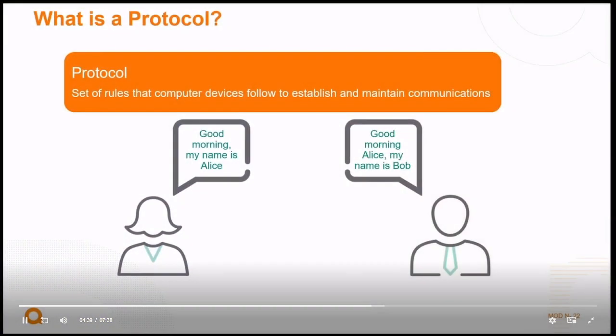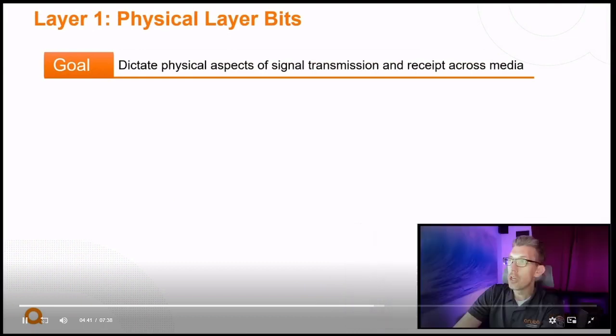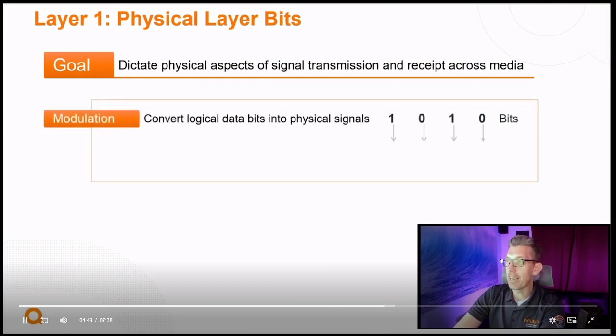We're going to focus on layer one and layer two. At each layer there are different protocols that describe its operation, and you need agreement between your station, your computer, your network interface card, what it's sending, and the protocol that your switch or router is expecting. If you're speaking two different protocols, it's the same as speaking two different languages — the bits won't be understood. Layer one as the physical layer describes what the bits mean as they're being laid on the wire.